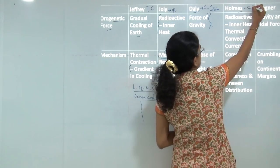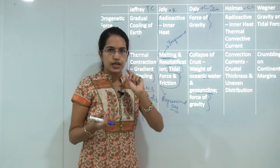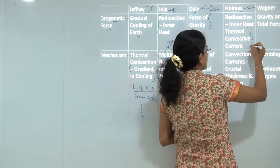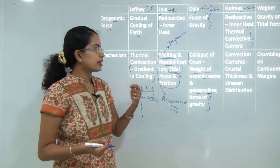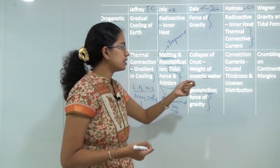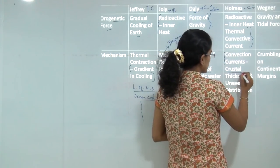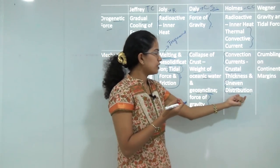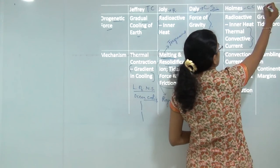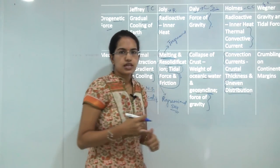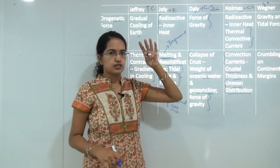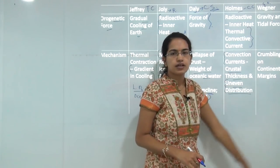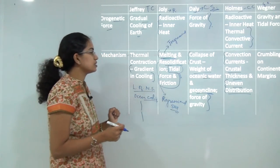The next theory was the convective current theory given by Holmes. He talked about radioactivity that comes out as a result of inner heat, but also considered convective currents within the earth as an important force leading to crustal thickening and uneven distribution of mountain ranges. Finally, Wegner's continental drift theory: his main forces were the gravitational force pushing continents toward the equator and the tidal force pushing them westward, resulting in crumbling of the continental margins.